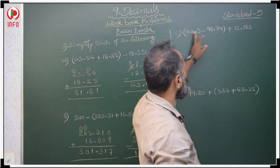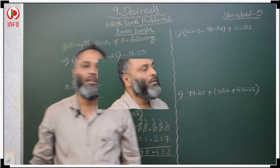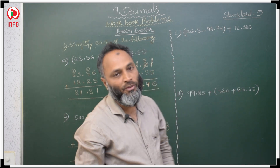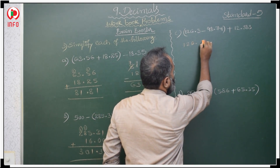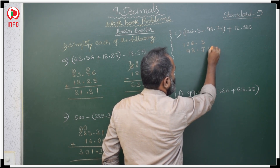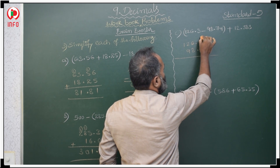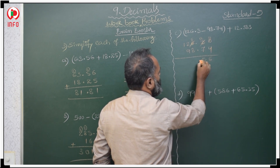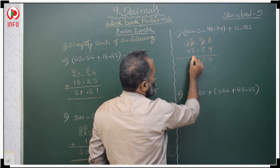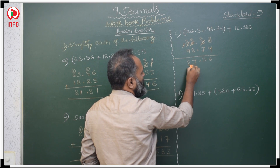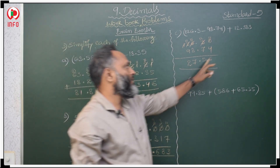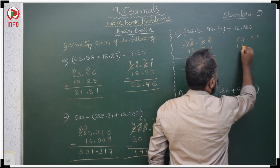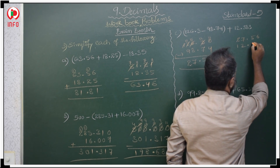Next: first subtract 98.74 from 126.3. Nothing in the thousandths place means 0. Borrow to get 2 and 10; 10 minus 4 is 6. Borrow again; 12 minus 7 is 5 point. Borrow again from here; here 15; borrow to get 27.56. So 126.3 minus 98.74 equals 27.56. Then add 12.383 to 27.56.